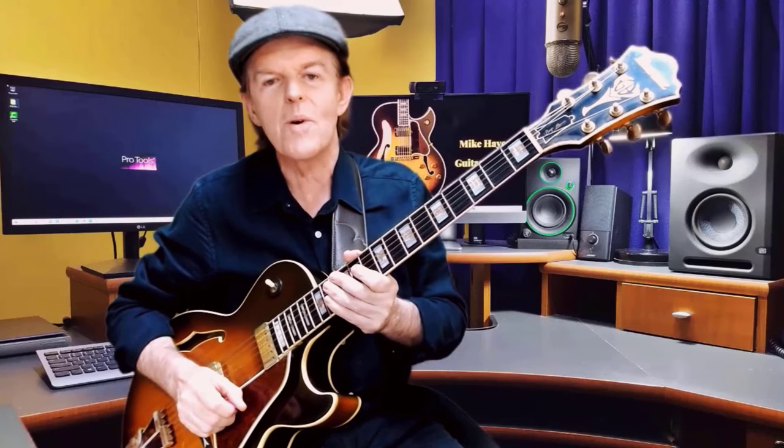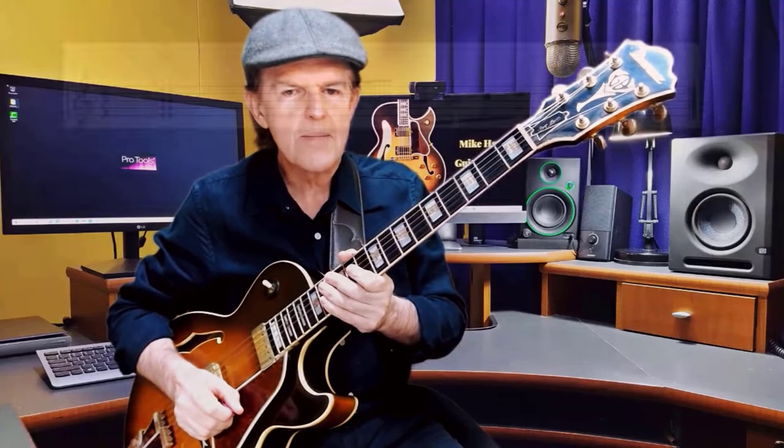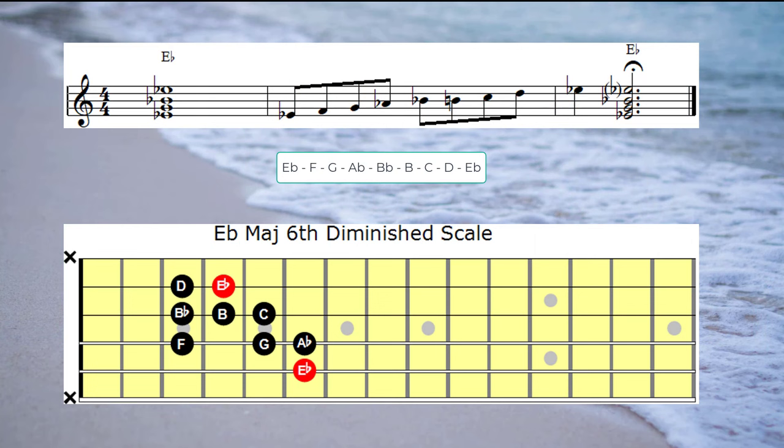Let's jump in and get cracking with the work for today's session on the two five ones, the top secret one. Let's get started by playing the E-flat major six diminished scale. We'll begin by playing an E-flat major chord then playing the scale and then finishing with an E-flat chord.